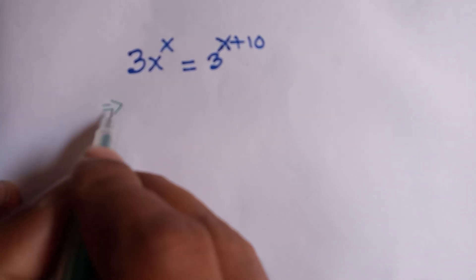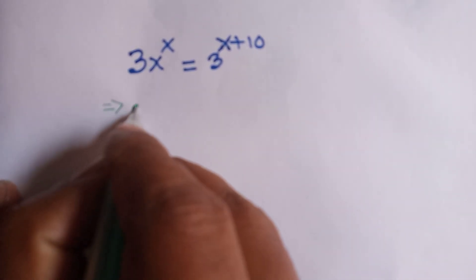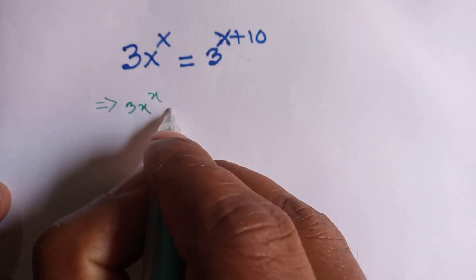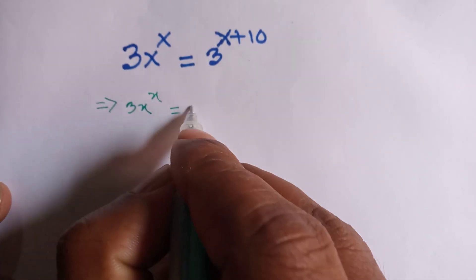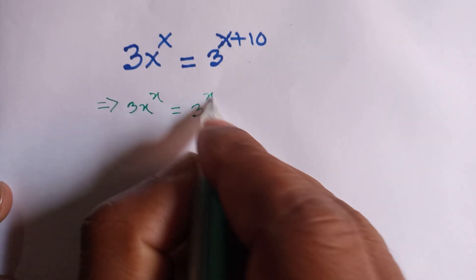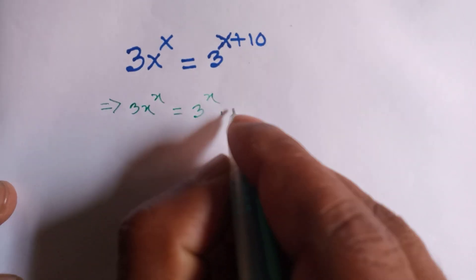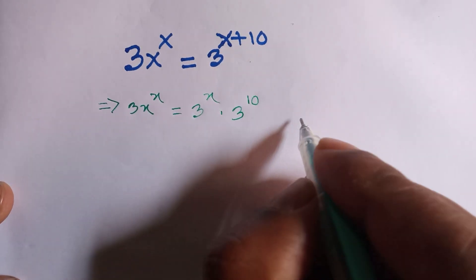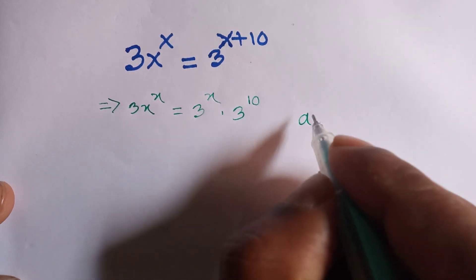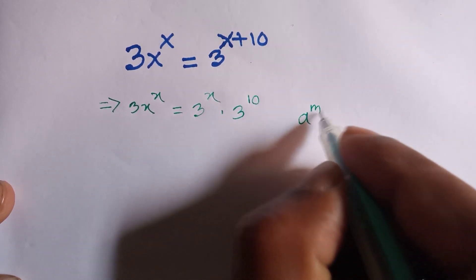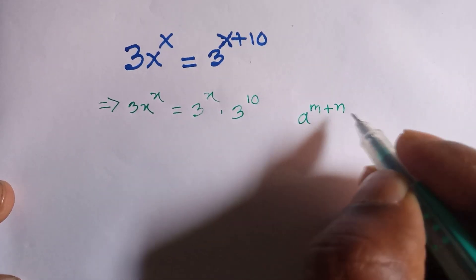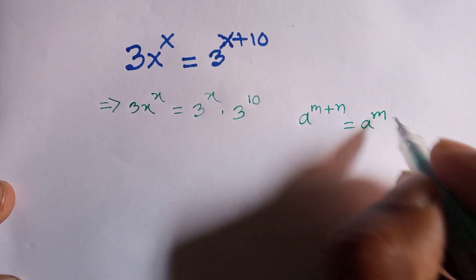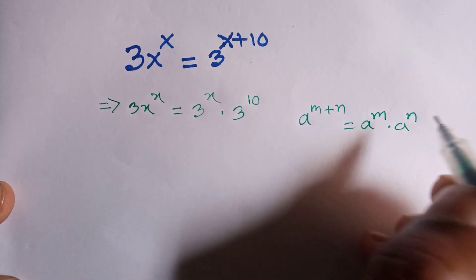Now we can write 3x to the power x is equal to 3 to the power x times 3 to the power 10. Here we apply this formula: a to the power m plus n is equal to a to the power m times a to the power n.